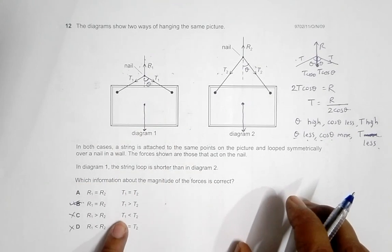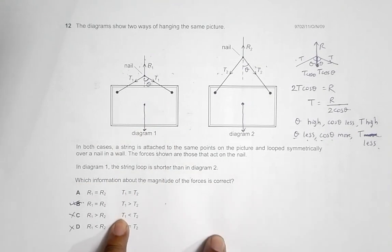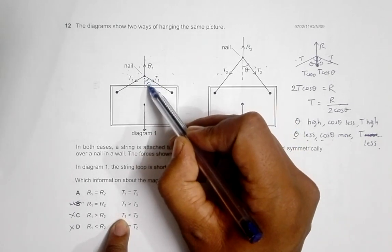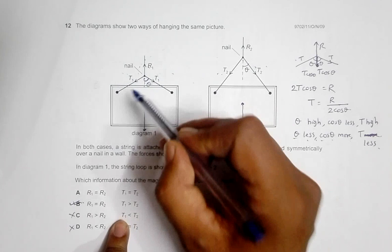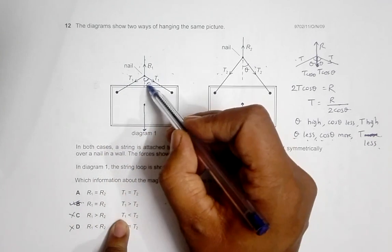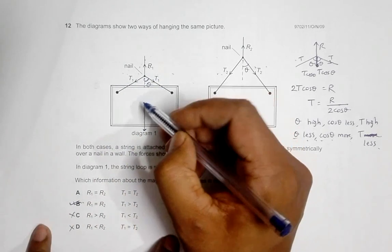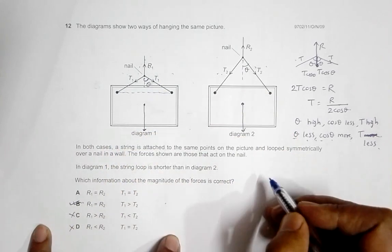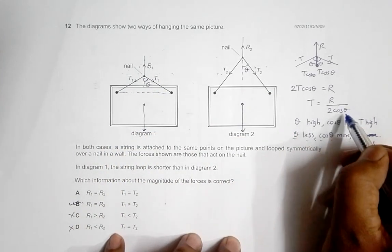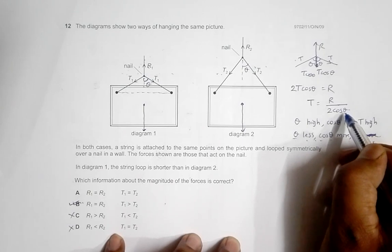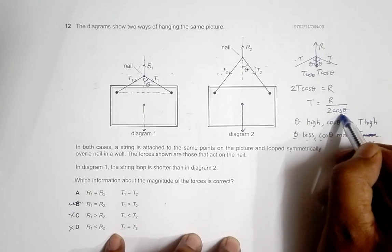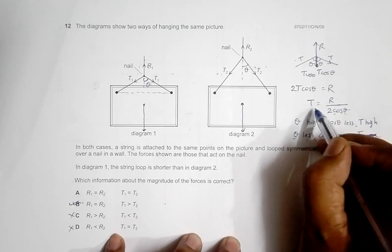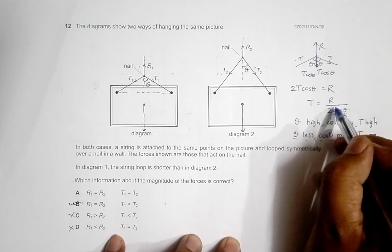As something extra, let's try to make this theta more and more by making the string shorter and shorter. Can you make this theta totally 90 degrees? This is not possible because if theta is 90, cos 90 becomes 0. R by 0 is infinity, so T will be infinity.